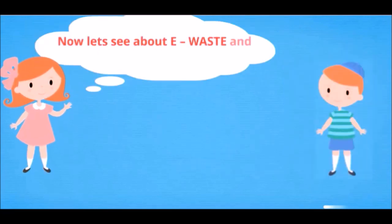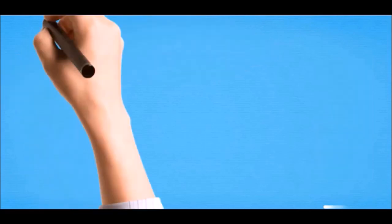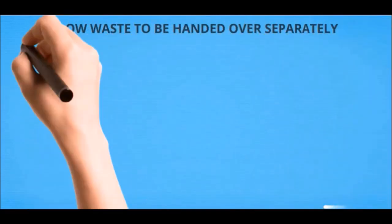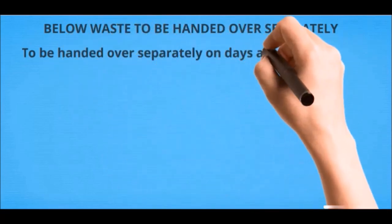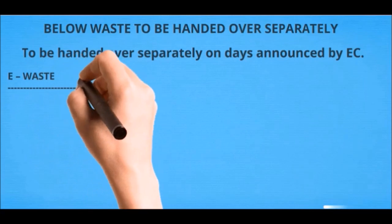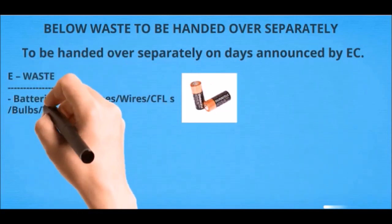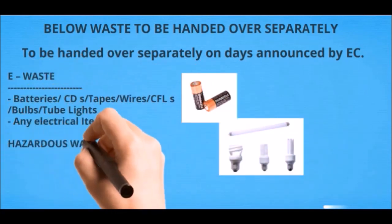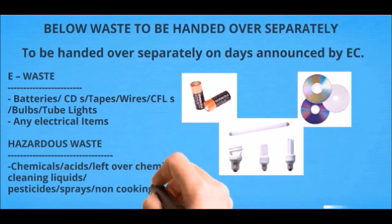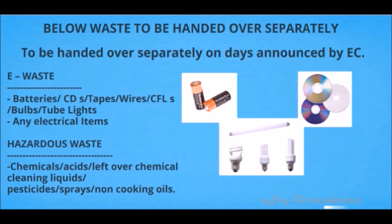Now let's see about e-waste and hazardous waste. These are to be handed over separately on days announced by EC. E-waste: batteries, CDs, tapes, wires, CFL bulbs, tube lights, and any electrical items. Hazardous waste: chemicals, acids, leftover chemical cleaning liquids, pesticides, sprays, and non-cooking oils.